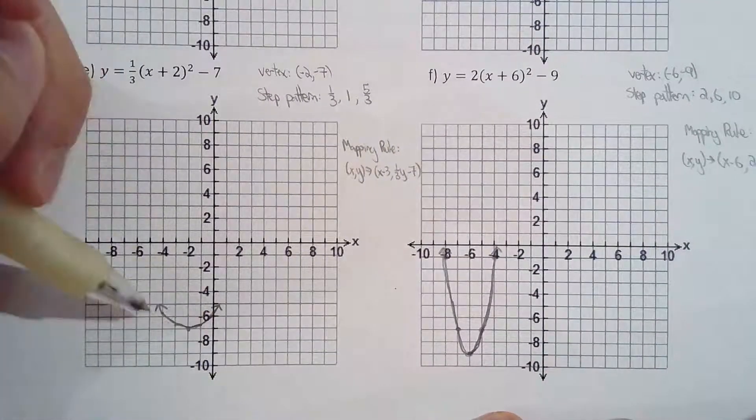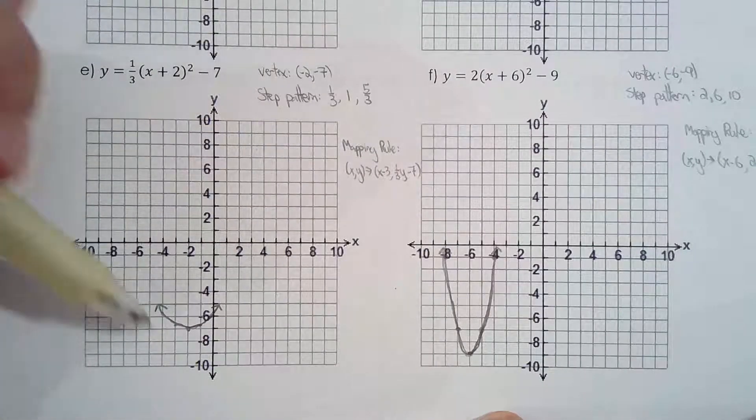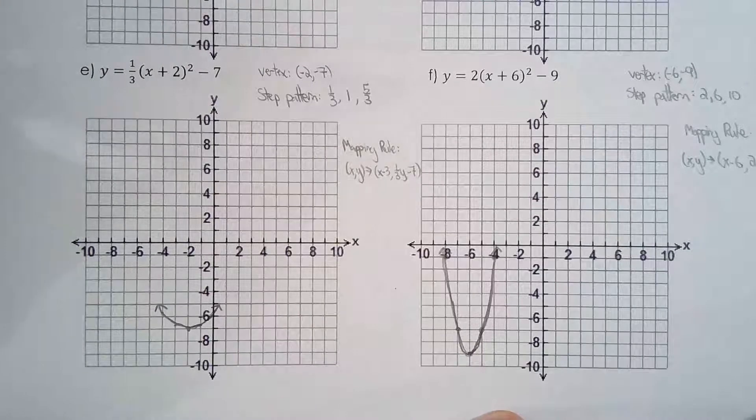E was a little, not tricky, but the points weren't as pretty to plot, but just approximate it, and that's all we expect you to do.